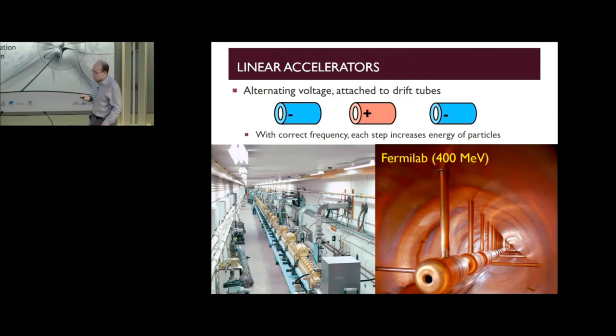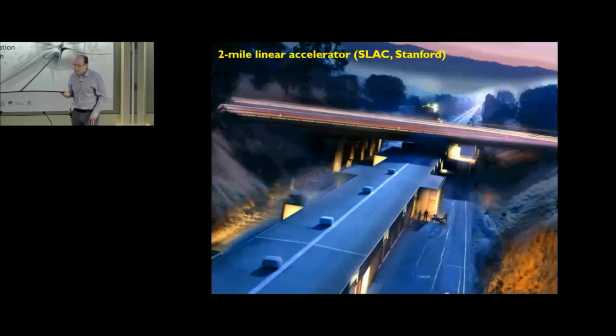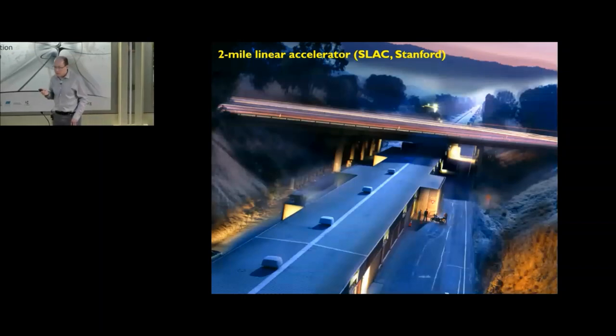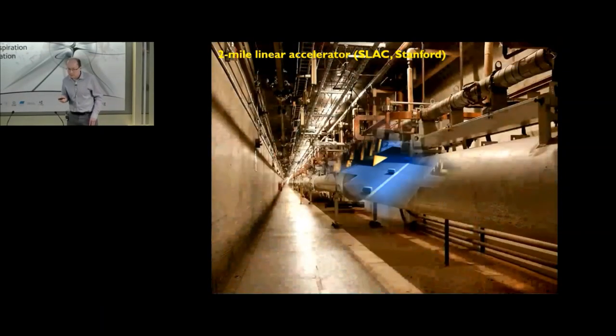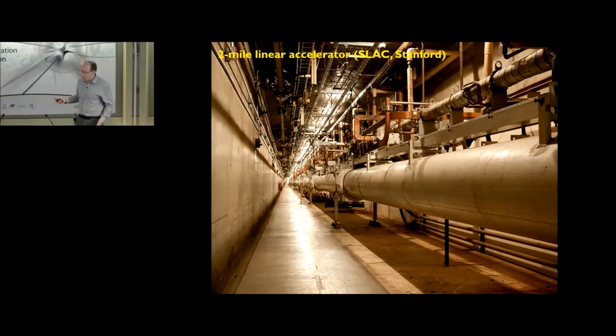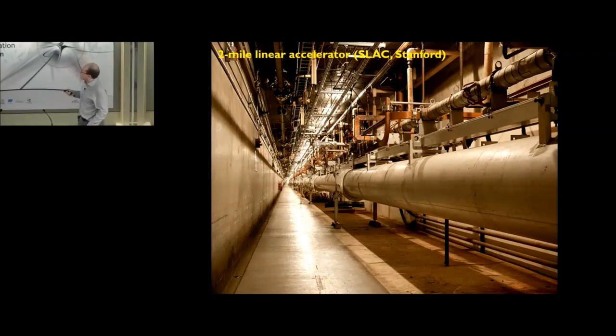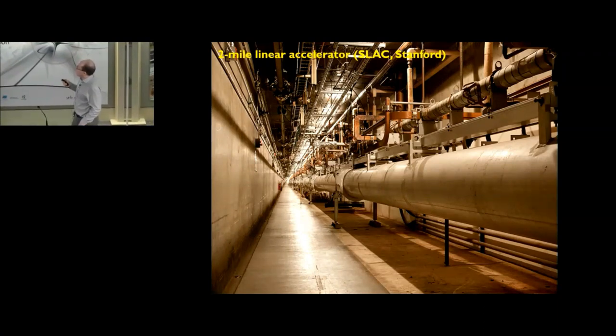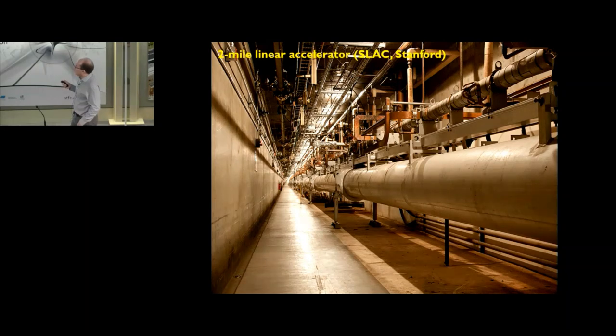If you keep on adding more stages and increasing the voltage, you eventually get to extremely large machines like the one shown here, the two mile linear accelerator from the US. This is what it looks like inside the building. You can see this is an extremely large building and it's full of extremely complicated machinery.